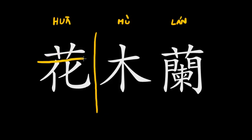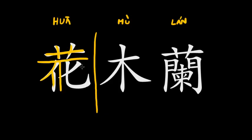You might have noticed that the character is separated into two parts, and the bottom part is separated into two parts again. You have to start with the top section, then continue with the left part of the bottom section, and finish with the right part. You start and finish each section before moving on to the next. This character is fairly simple because it only has seven strokes.